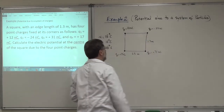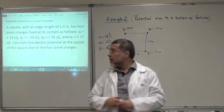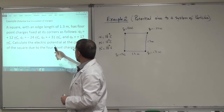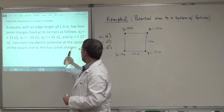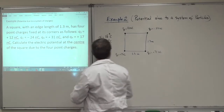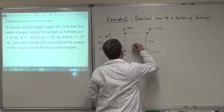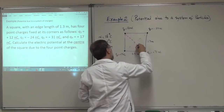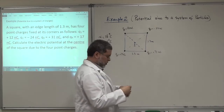Q2 is equal to minus 24 nanocoulombs — a negative charge. Q3 is plus 31 nanocoulombs. And Q4 is plus 17 nanocoulombs. He gave you the charges at the corners of the square. Now, calculate the electric potential at the center of the square due to the four point charges. You find the center by drawing the two diagonals — where they cross is point P.